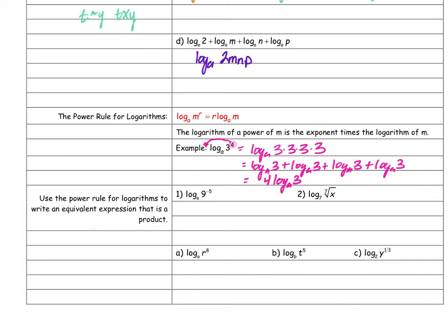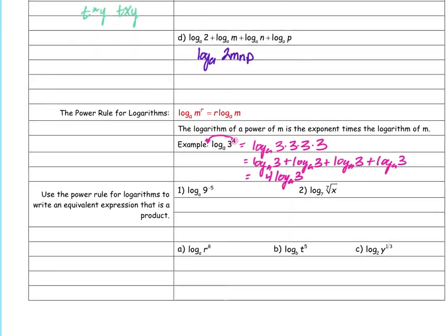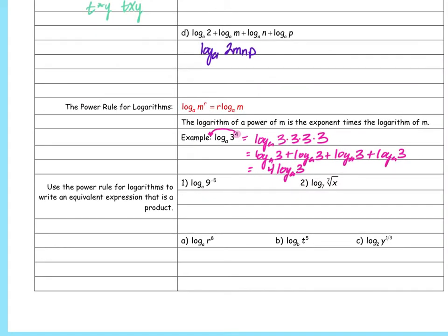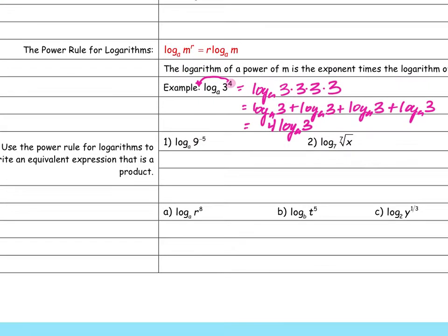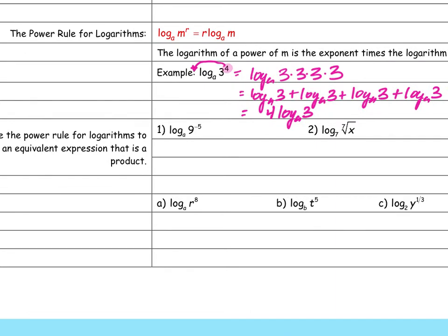Let's look at some examples — just applying the rule, not simplifying. I take the exponent and move it to the front. So this becomes negative five log base a of nine.